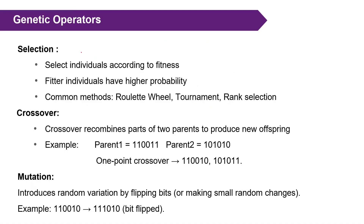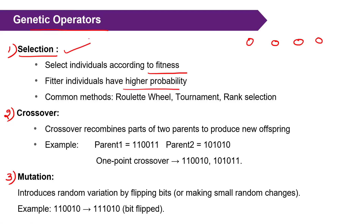Before discussing an example, let's look at the operators used in genetic algorithms. There are mainly three operators: selection, crossover, and mutation. Selection means choosing individuals from the population that may generate the next generation, based on their fitness value. Different methods exist for selecting the best parents from the population.